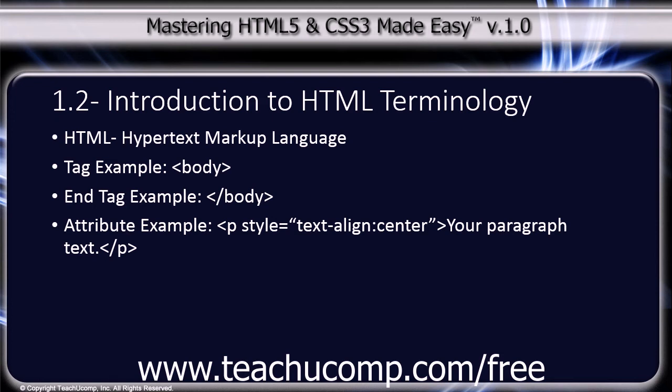Entities are special characters you can add to a page, such as a copyright or trademark symbol. Entities begin with an ampersand and end with a semicolon. For example, the code to insert a registration mark is ampersand reg semicolon.